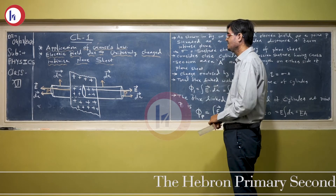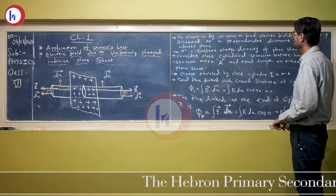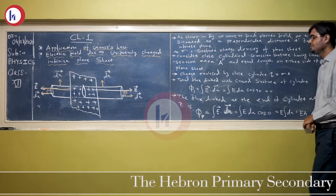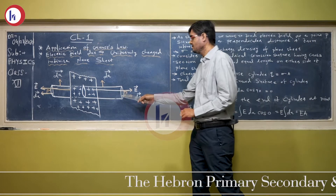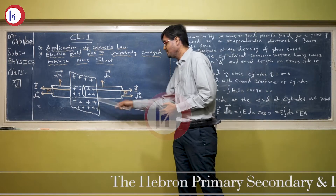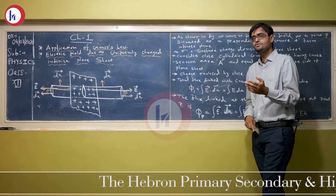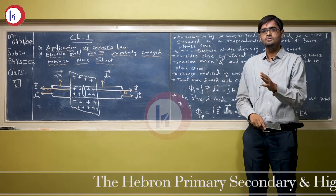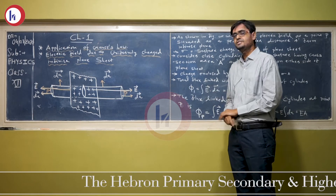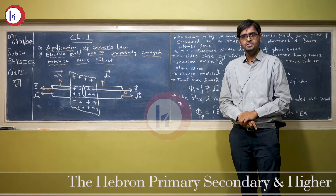Suppose we want to find out the electric field at a point P. As shown in the figure, point P is situated at a distance r from the plane sheet. Now, when you are going to apply Gauss's law, you have to have some kind of symmetry. Point P is at distance r from the plane sheet.